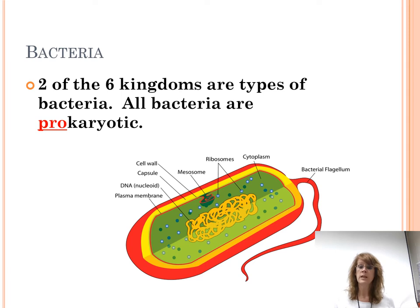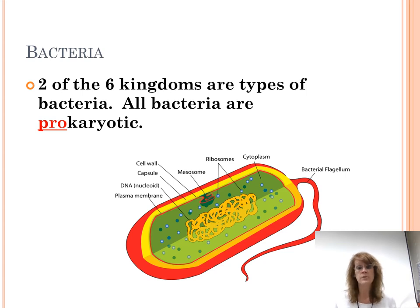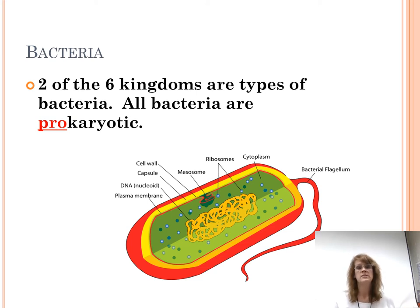Eukaryotes are more advanced than prokaryotes. It's believed that prokaryotes formed first in evolution because they're very basic — they don't have all those different organelles. They have ribosomes, because cells have to make proteins, and they have one piece of DNA, always in a circle. That piece of DNA is their genetic material, but they don't have a nucleus to protect their DNA like we do.